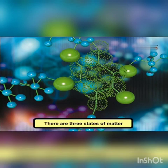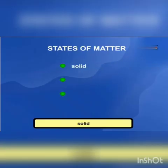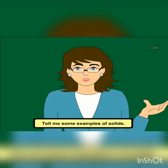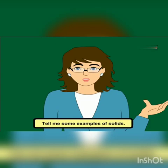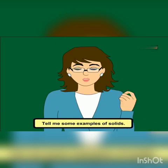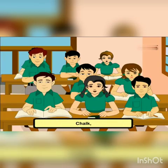All the molecules of a substance are same, but different substances have different molecules. There are three states of matter: liquid, solid and gas. Some examples of solids are chalk, wood and iron.